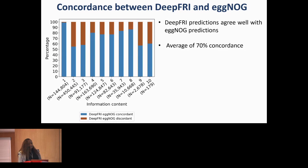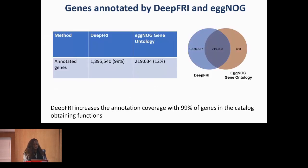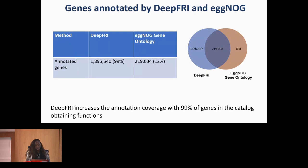Shifting to a different perspective — the genes annotated by both methods. We had around 1.9 million genes in our gene catalog. DeepFRY annotates almost all genes: 99% obtained GO terms in the molecular function branch, while EggNOG only predicts around 12%. The intersection between genes annotated by both methods is around 219,000 genes, while DeepFRY predicts 1.6 million unique genes. DeepFRY substantially increases annotation coverage, giving a better representation of the functions encoded in the human gut microbiome.